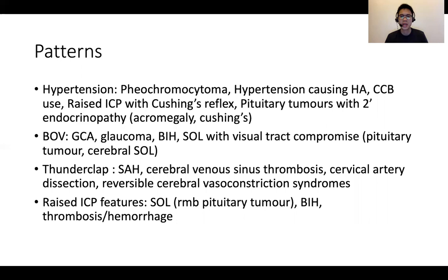This is the bit about patterns. If a patient has headache with associated hypertension, think of endocrinopathies such as pheochromocytoma, acromegaly, and Cushing's. Hypertension causing headache at extremities of blood pressure is possible, though some argue hypertension itself doesn't really cause a headache. Calcium channel blocker use for hypertension can also cause headache. Raised ICP with Cushing's reflex could be another explanation, as could pituitary tumors. If there's blurring of vision, GCA is an important cause. BIH can also cause visual disturbances, and any space-occupying lesion compromising the optic chiasma or visual pathway axis can cause visual problems.